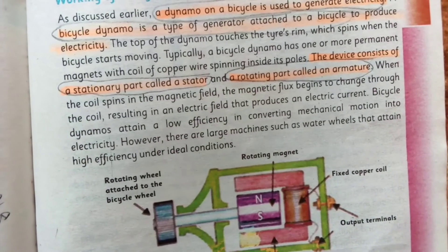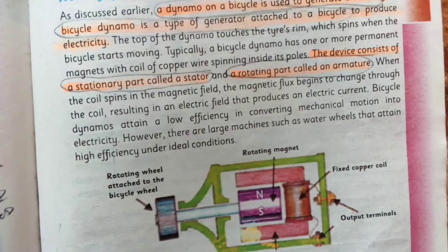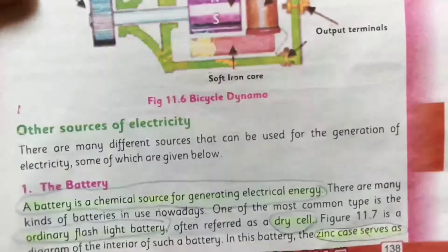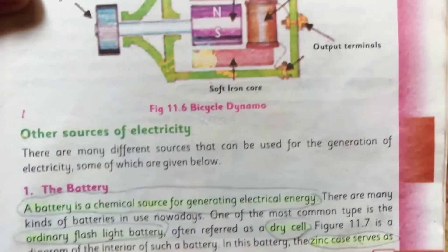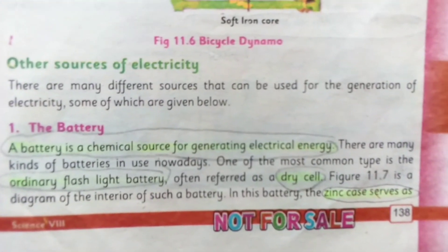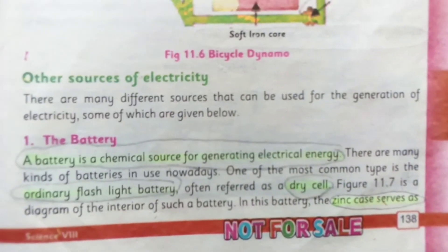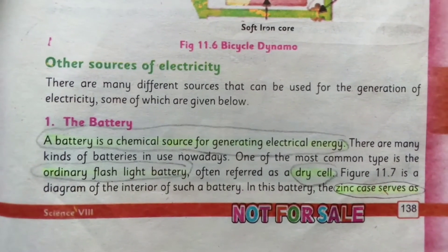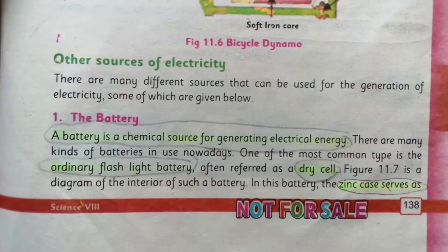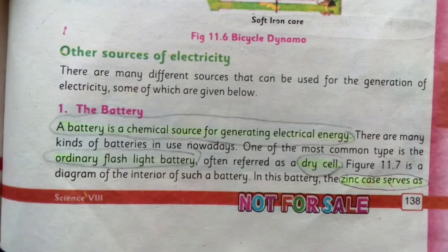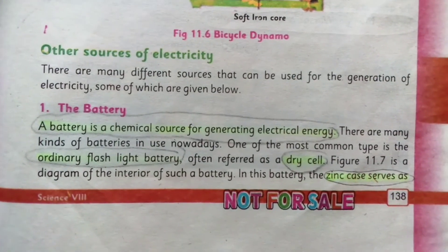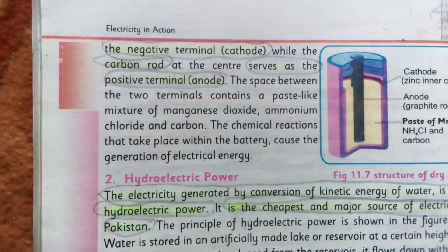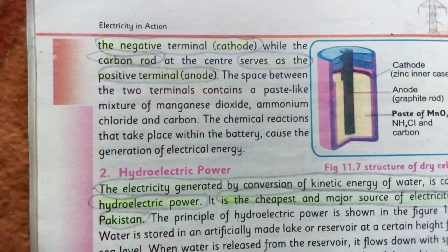What is a battery? A battery is a chemical source of generating electrical energy. The chemical source of generating electrical energy is called a battery.